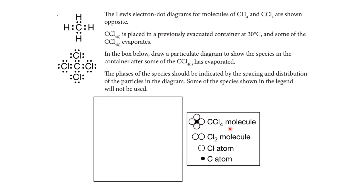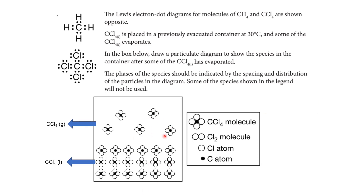In the particulate diagram, the liquid state is shown at the bottom of the container with CCl4 molecules that are neither very closely packed nor very far apart. Some molecules are shown above the liquid phase to represent evaporation. In the gaseous phase, the molecules are more spread apart and not arranged in any particular pattern, illustrating the difference in spacing between liquid and gas phases of CCl4.